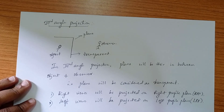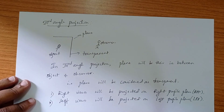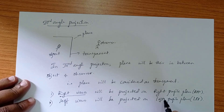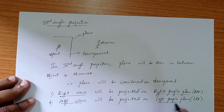That is the difference between first angle projection and third angle projection. In first angle projection, we get right side views on the left profile plane and left side views on the right profile plane. But in case of third angle projection, the right side views will be projected on the right profile plane and the left views are projected on the left profile plane.